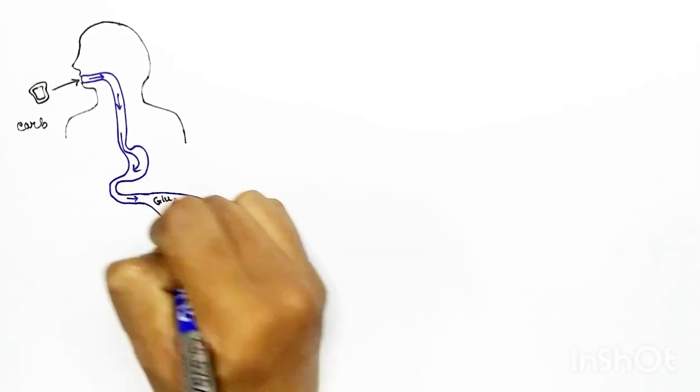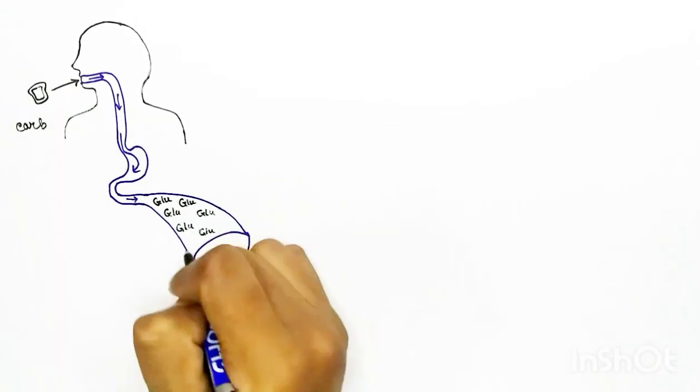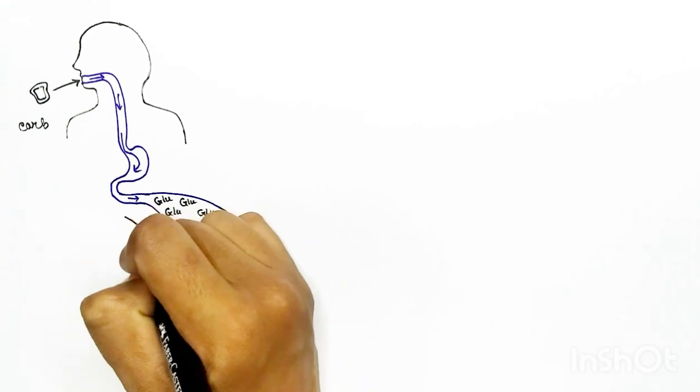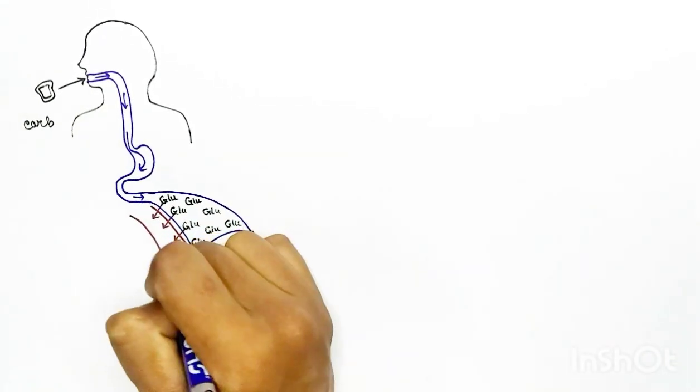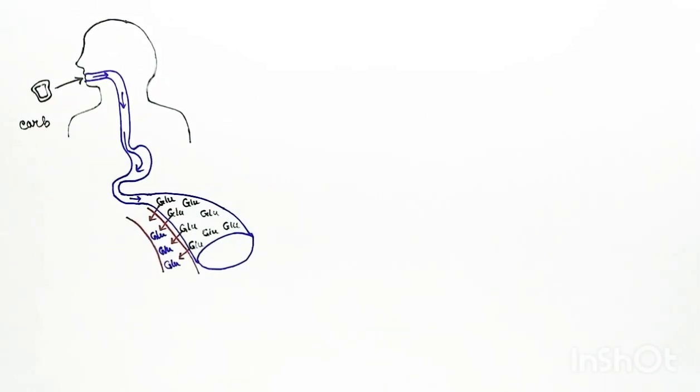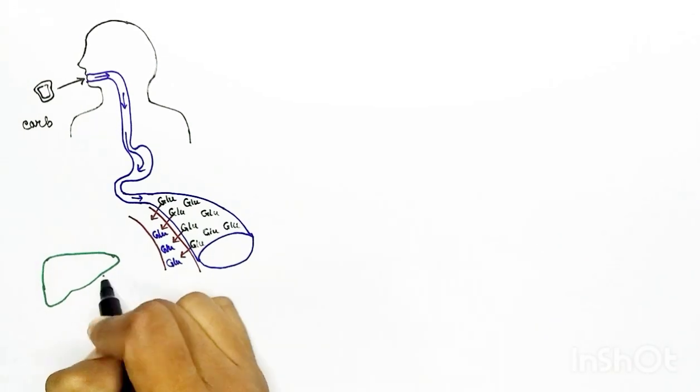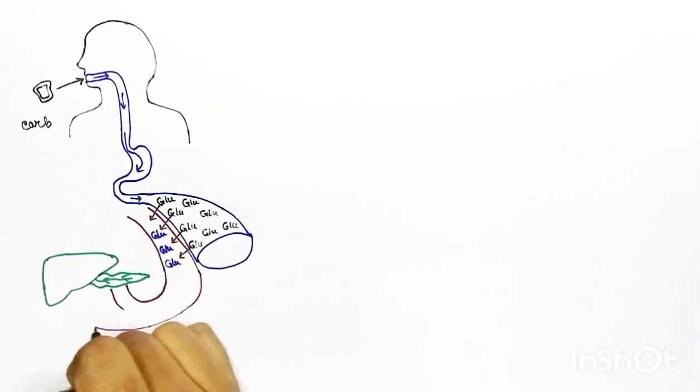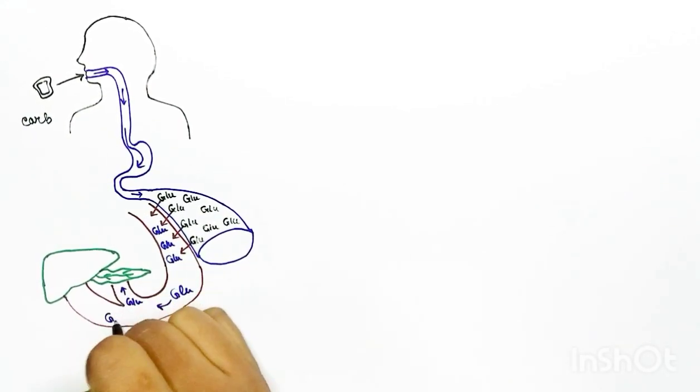When we eat carbohydrate-rich food, the carbohydrate breaks down to glucose in our small intestine, then the glucose gets absorbed in our bloodstream. Our body maintains a specific blood glucose level and the excess glucose gets absorbed in the liver cells. The blood which absorbs the glucose from the intestine goes to two organs: first it goes to liver and the pancreas.